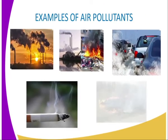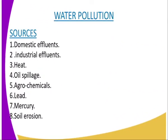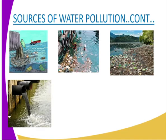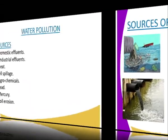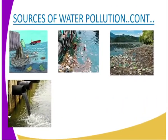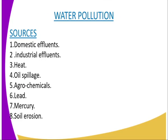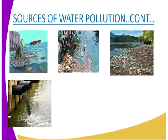We are now going to look at water pollution, whereby its sources include domestic effluents, industrial effluents, heat, oil spillage, agrochemicals, lead, mercury, and soil erosion. These are some diagrammatic representations showing us how water is being polluted. We can start with our first one: domestic effluents. Untreated sewage from urban centers gets discharged into rivers used for water supplies for domestic use.